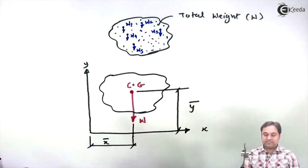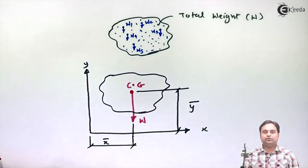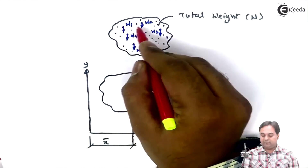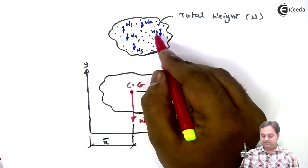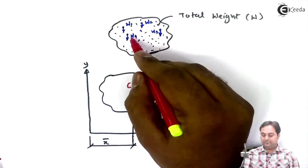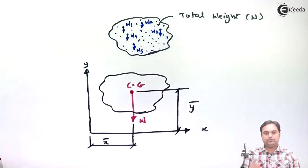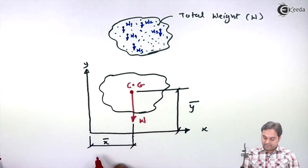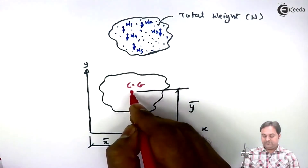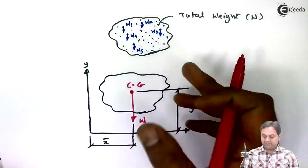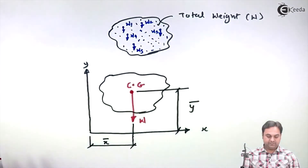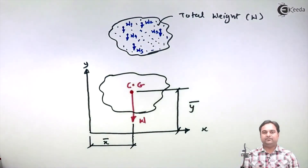So for a 3D figure which has volume and weight, the weight is made up of small individual quantities. When added together they give total weight W, which acts about a single point called the center of gravity, located at x̄ and ȳ. This CG will not change even if we change the direction or orientation of the body. In this video you will learn the definition and concept of center of gravity.